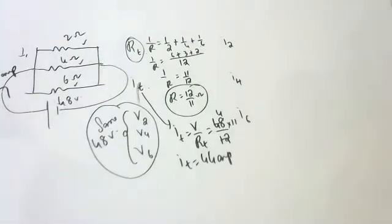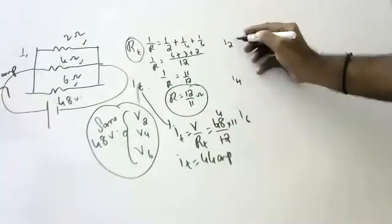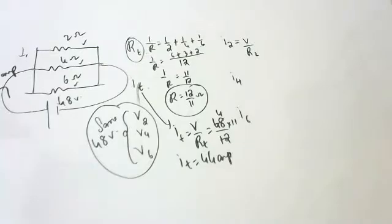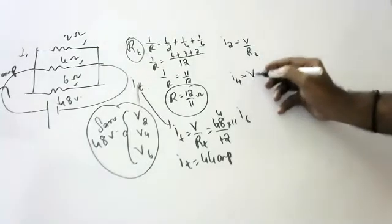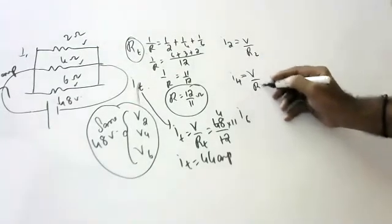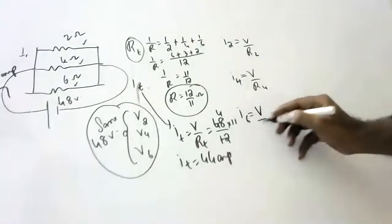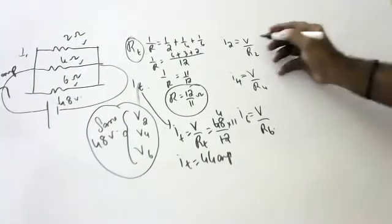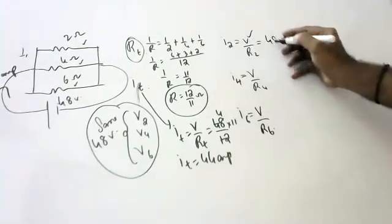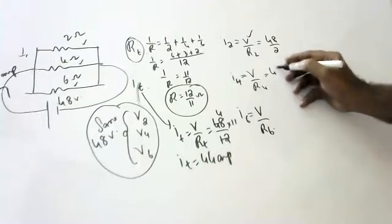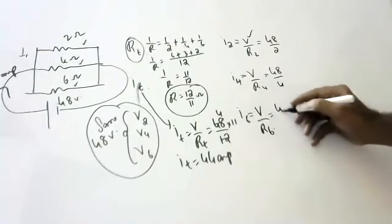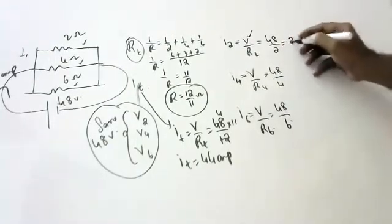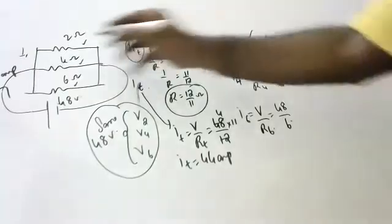That 44 amperes divides among the resistors. I2 = V/R2 = 48/2 = 24 amperes. I4 = V/R4 = 48/4 = 12 amperes. I6 = V/R6 = 48/6 = 8 amperes. So 24 amperes are going through the 2-ohm resistor.